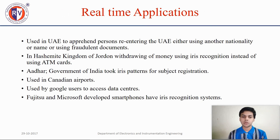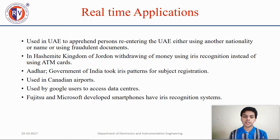Real-time applications: iris recognition is used in the UAE to apprehend persons re-entering using another nationality, name, or fraudulent documents. In the Hashemite Kingdom of Jordan, money can be withdrawn using iris recognition instead of ATM cards. The government of India collects iris patterns per subject during registration. It is also used in Canadian airports and by Google users to access data sensors. Fujitsu and Microsoft have developed smartphones with iris recognition systems.